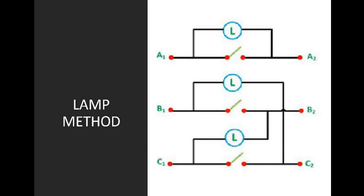In the dark lamp method, the same phases of two different systems are compared. In the bright lamp method, the different phases of the two different systems are compared. When we get a favorable situation, we connect both systems. I am not going to explain too much about these methods, so let us move to the next.